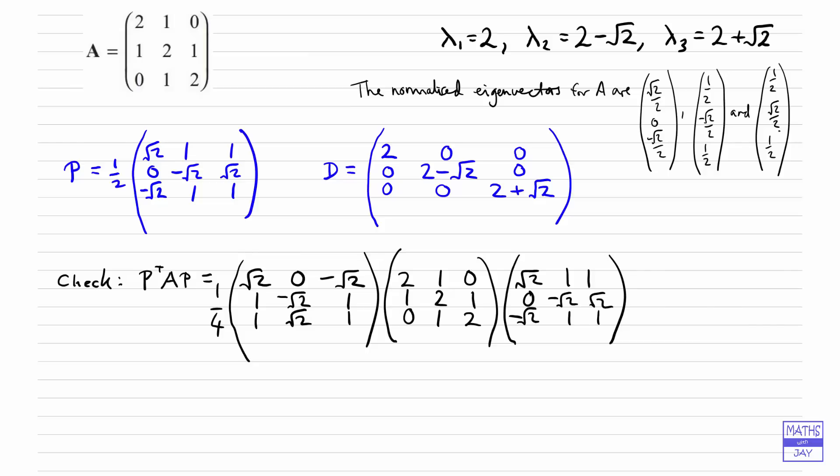And if you do that, what you ought to find is that you get on the main diagonal 8, 8 minus 4 root 2, and 8 plus 4 root 2. And of course everything else is 0 because this is a diagonal matrix, which is almost not fitting on the page. So that is a way of checking that this works out correctly. So that is equal to the matrix D.